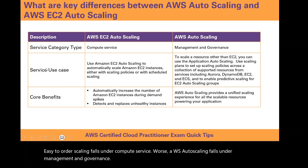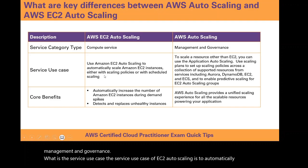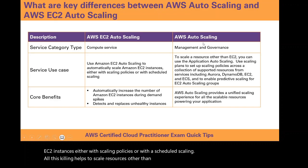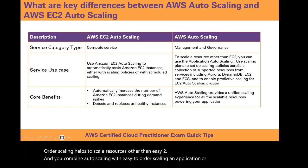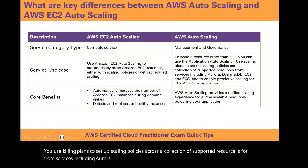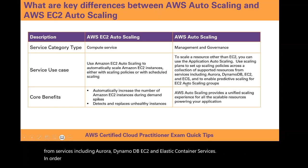What is the service use case? EC2 autoscaling is used to automatically scale EC2 instances either with scaling policies or with scheduled scaling. AWS autoscaling helps to scale resources other than EC2, combining autoscaling with EC2 autoscaling and application autoscaling. You use scaling plans to set up scaling policies across a collection of supported resources from services including Aurora, DynamoDB, EC2, and Elastic Container Services, in order to enable predictive scaling for EC2 autoscaling groups.